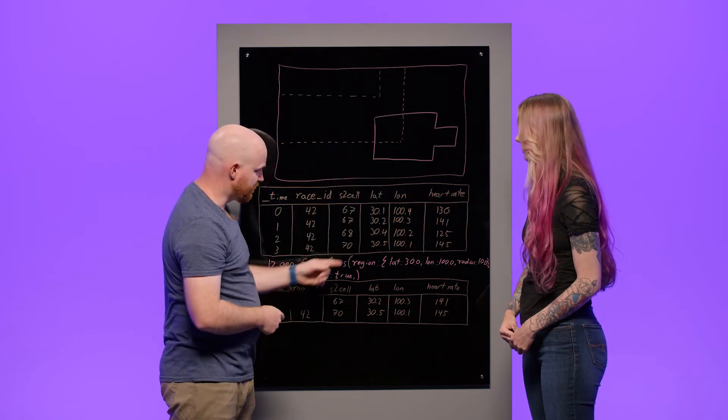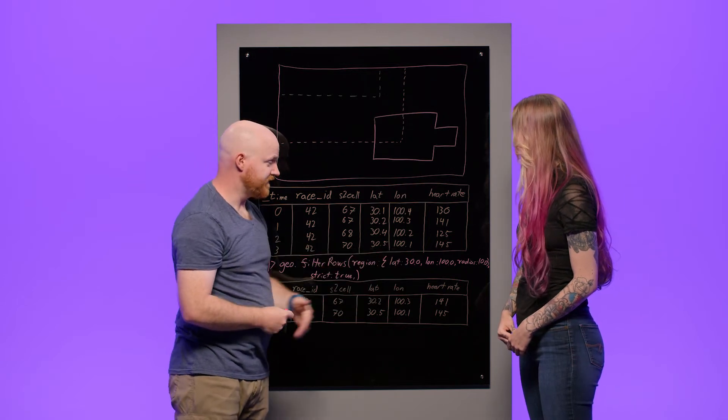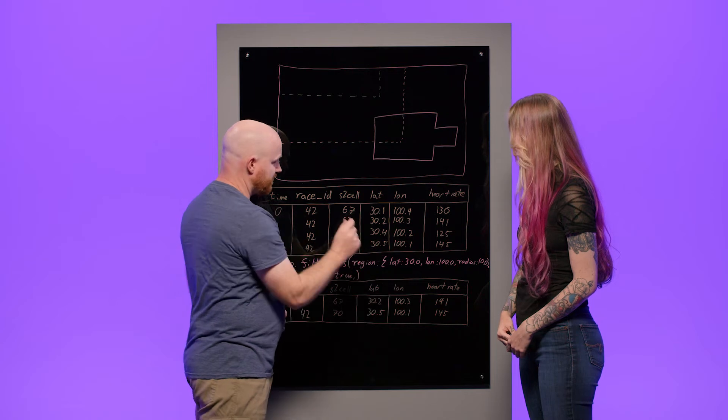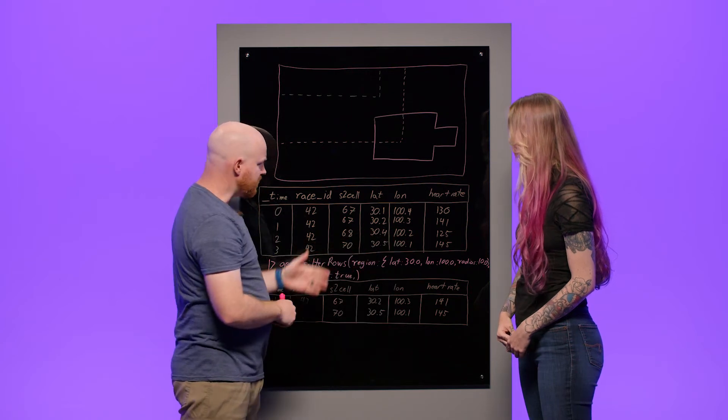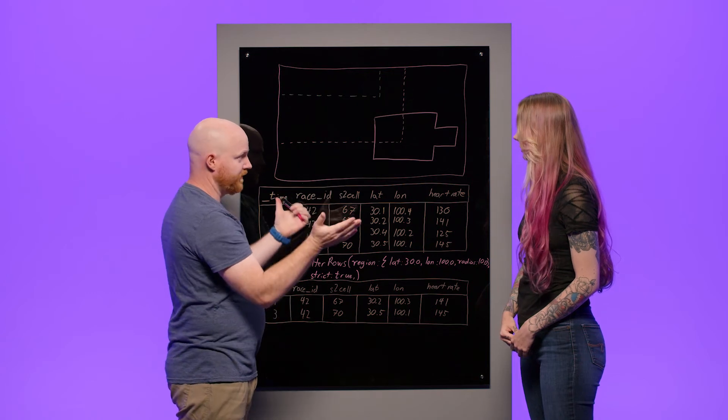and filter it to only the rows that are within the region that we've specified. So if we take a closer look here, this region argument specifies the details of a shape or a region. This one specifies a circle, so we have a lat and long as a center point and then a radius. You can specify shapes, like I've drawn up here, that are arbitrary polygon shapes.